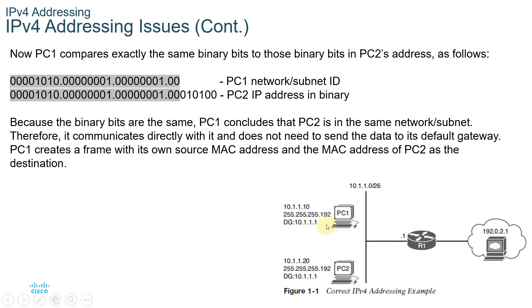Therefore, PC1 communicates directly with PC2 and does not need to send the data to its default gateway. PC1 creates a frame with its own source MAC address and the MAC address of PC2 as the destination. The computer first checks whether the destination is on the same network. If it is not, the source PC will forward the data to the available default gateway.